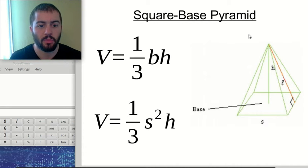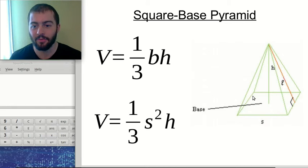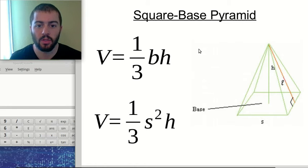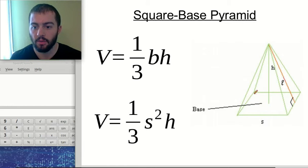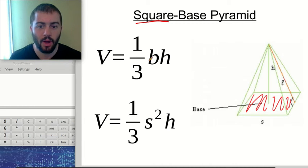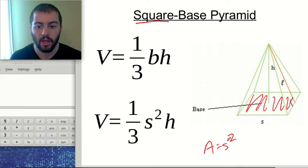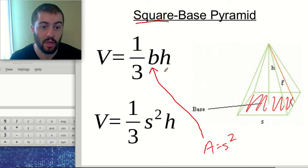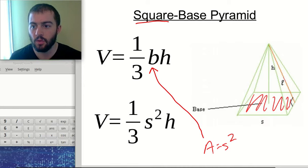The next shape we're going to look at is a square base pyramid. Here we have a pyramid — just think of the pyramids of Egypt — that have a square base and then an apex up here. We can express the volume two different ways: one-third base times height, where the base is the area of the whole base, or one-third side squared times height for a square base pyramid.